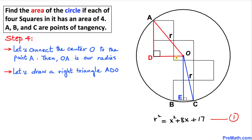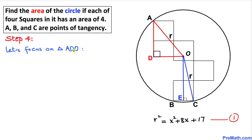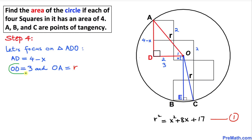Let's focus on right triangle ADO and find the length of AD. From the previous step we know one part was x units, and each square side is two units, so AD equals 2 plus 2 minus x, which is 4 minus x. Side OD equals 2 plus 1, which is 3 units. And OA equals r.